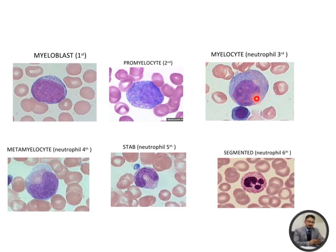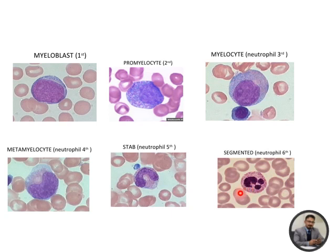The myeloblast matures into promyelocyte and then myelocyte — the nucleus is becoming eccentric. Indentation starts at the metamyelocyte stage, where the indentation becomes more prominent and the cell becomes a band or stab cell. Then the nucleus becomes lobulated — eosinophils have two lobes, and neutrophils have three to five lobes. These are the six stages of granulopoiesis.